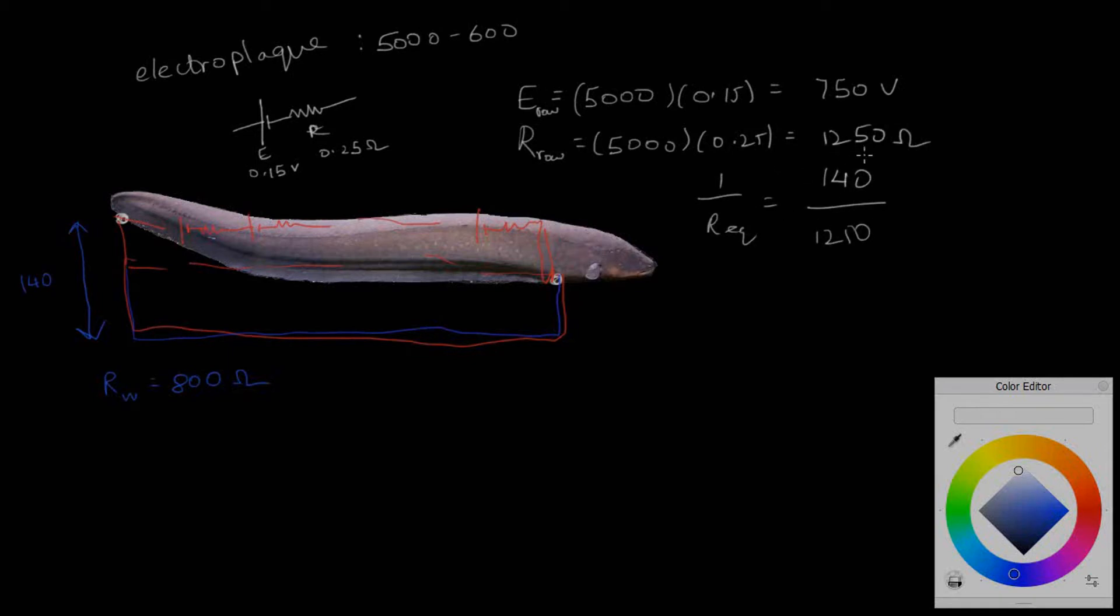From the resistor simplification laws, we know that we've got 1,250 ohms and 140 of them arranged in parallel, so 1 by R_equivalent equals 140 by 1,250 added over 140 times. So R_equivalent works out to be 8.93 ohms.